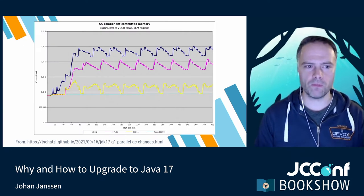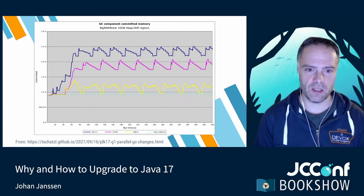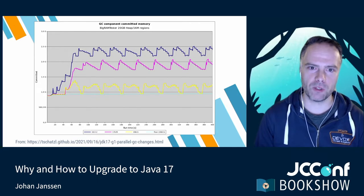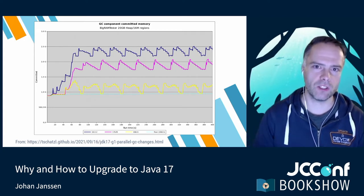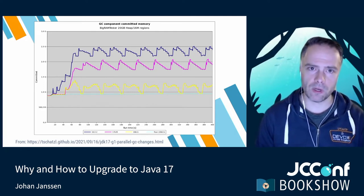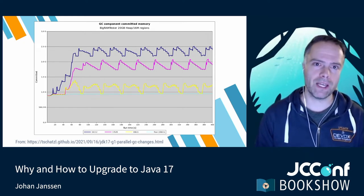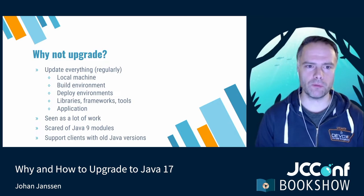For a concrete performance example, this diagram shows in purple Java 17, in blue Java 16, and in yellow Java 18. It compares the committed heap size, showing that newer versions make more efficient use of RAM. So there are concrete examples of how new versions of Java actually perform better or use fewer resources to run your application.